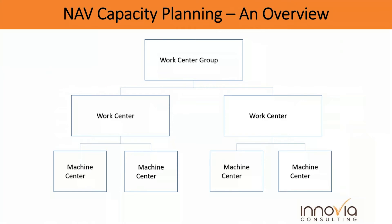Let me first cover the structure of how NAV looks at your manufacturing facility. NAV is a fairly generic program but it encompasses a lot of detail. You've got work center groups — I would classify those as different manufacturing facilities. Within that is truly a work center. A manufacturing facility can have a single work center or several pods. For example, a company dealing with metals might have a work center for CNC machines, a work center for painting, and one for final finish — those would be different work centers.